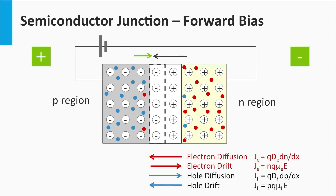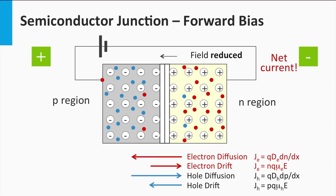The effective electric field across the depletion zone is the sum of the built-in field and the applied electric field, and becomes smaller as a result of the forward bias. As a consequence, the width of the depletion zone is affected — it becomes much narrower. This means that the diffusion becomes more dominant than drift, as you can see by looking at the equations for the current densities related to diffusion and drift.